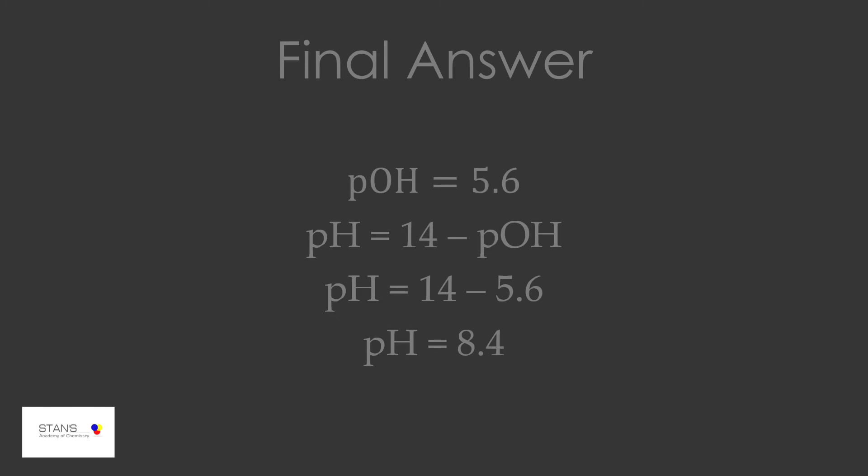The final answer is pOH equals 5.6. Since we need the pH, pH equals 14 minus pOH, or pH equals 14 minus 5.6, which is 8.4. This is in agreement with our observation because basic buffers will have a pH greater than 7, and the pH of this buffer solution is 8.4.